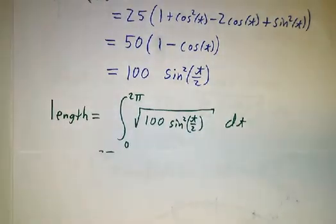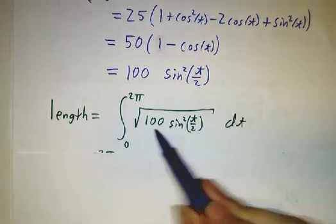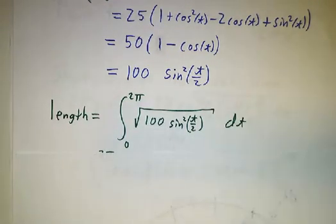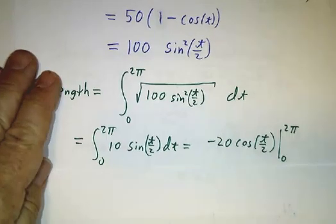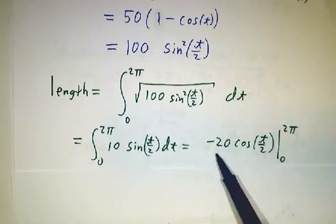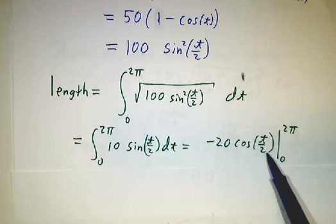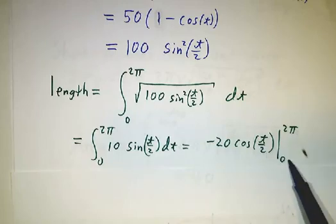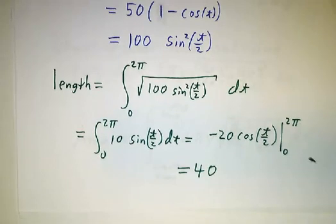So our length is the integral from time 0 to 2π. That's just the integral of 10sin(t/2)dt. That's -20cos(t/2), evaluated at 2π and 0. And that gives us 40.